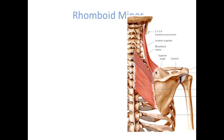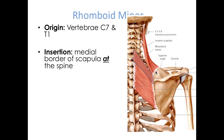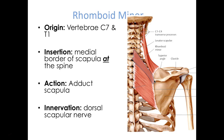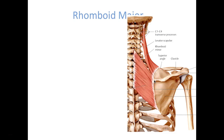Rhomboid minor is a small muscle originating from cervical vertebra 7 and thoracic vertebra 1, inserting at the medial border of the scapula at the spine. Its action is to adduct the scapula, bringing your shoulder blades closer together toward the vertebral column. Innervation is branch of the brachial plexus. There's a mnemonic — Nintendo DS — for the dorsal scapular nerve, but since we're not memorizing that nerve, don't worry about it.